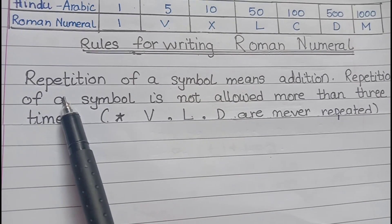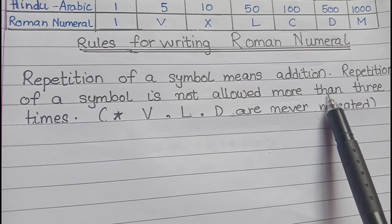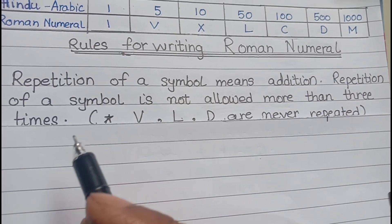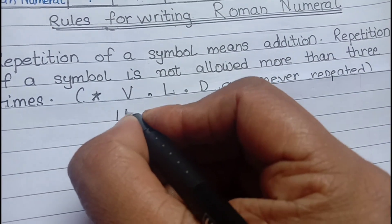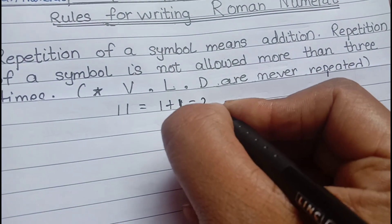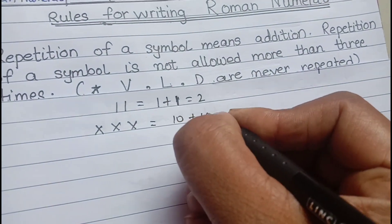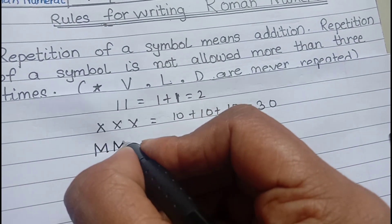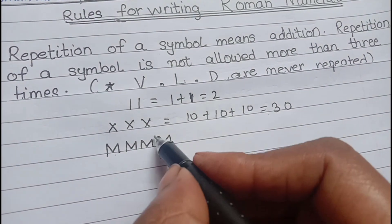Rule 1: Repetition of a symbol means addition. Repetition is not allowed more than three times. So if you write I I, that is 1+1=2. If you write X X X, that is 10+10+10=30. But if you write M four times, that is not possible — repeating any symbol four times is not allowed.